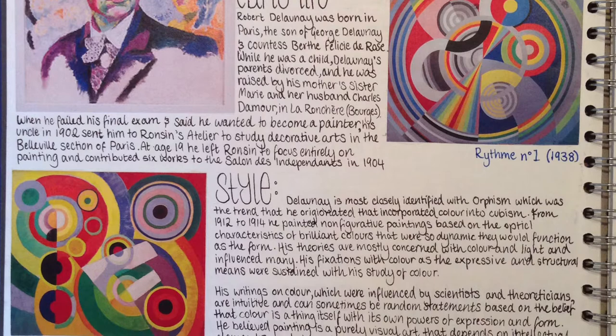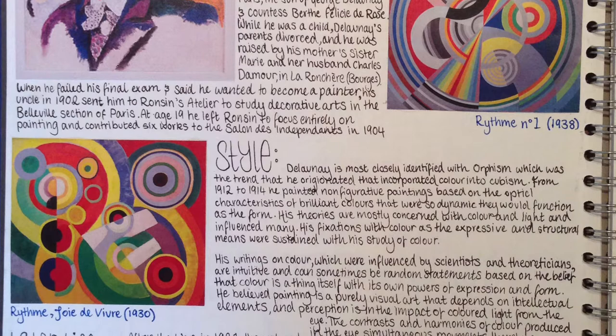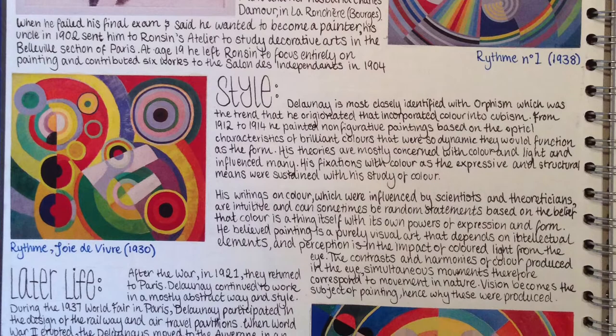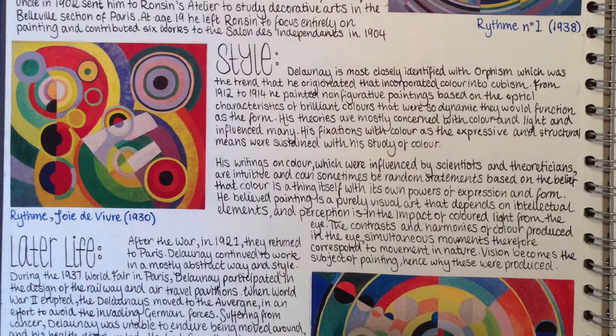Her work looks very real, which makes her a realism artist, and she is alive right now which makes her a contemporary artist — she is making work in the modern day. A contemporary artist is just an artist that is alive and making work in the modern day. This is a very good keyword to use in your work if you want higher marks as a Year 7.